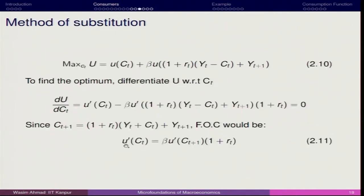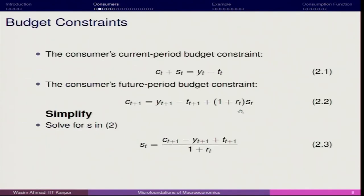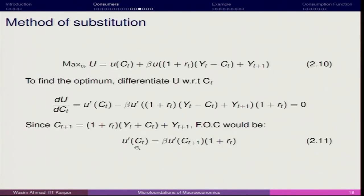So the condition we are getting is that the marginal utility of current period consumption equals beta times the marginal utility of future consumption, multiplied by the rate of return 1 plus Rt — which is the reward he gets when saving in the current period. The factor 1 plus Rt comes from the fact that whatever the representative agent saves in the current period, he gets 1 plus Rt in the future. So marginal utility of current consumption equals beta times 1 plus Rt times marginal utility of future consumption.